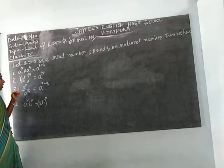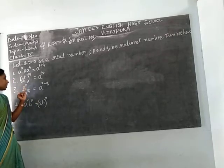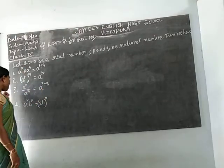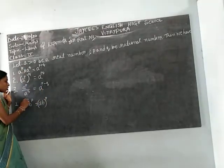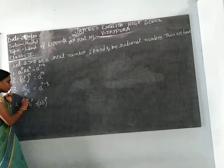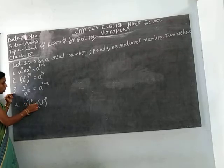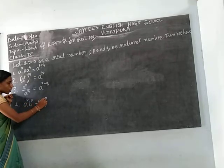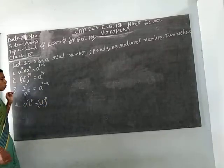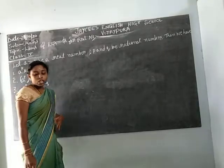Next formula: A to the power of P into B to the power of P equals A into B, all to the power of P.